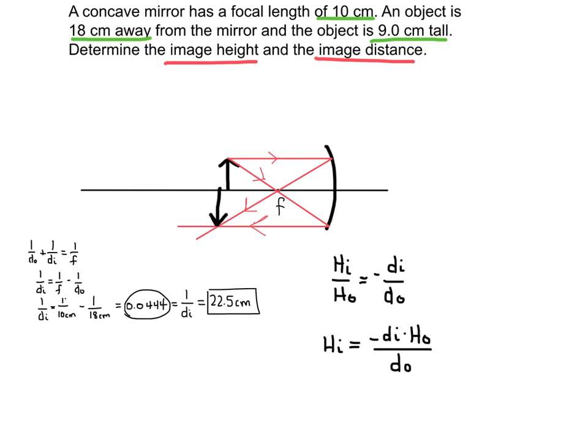And I can go ahead and plug in all of the numbers that I know. So I know the image distance, I just solved for that right here. And the height of the object is given to me in the problem. It's 9 centimeters. And the distance of the object is right here, 18 centimeters.